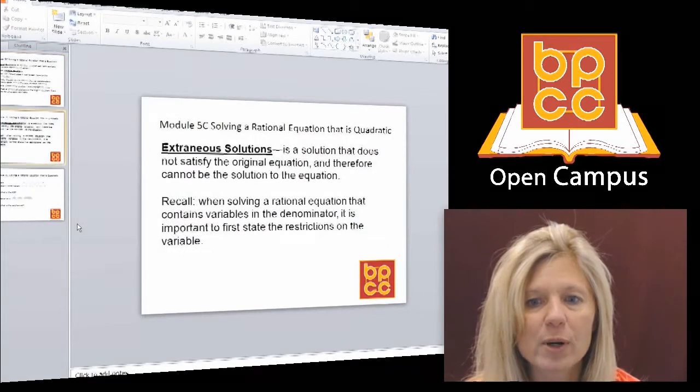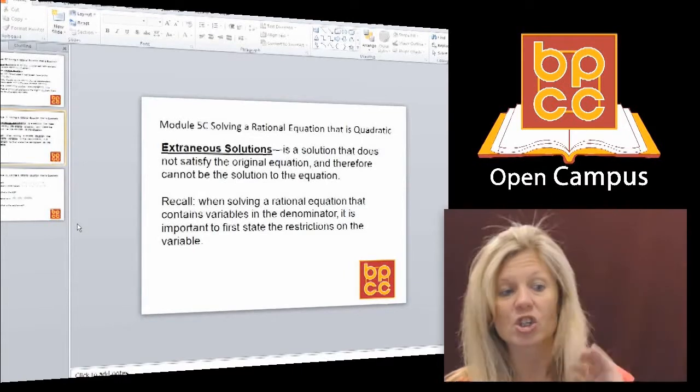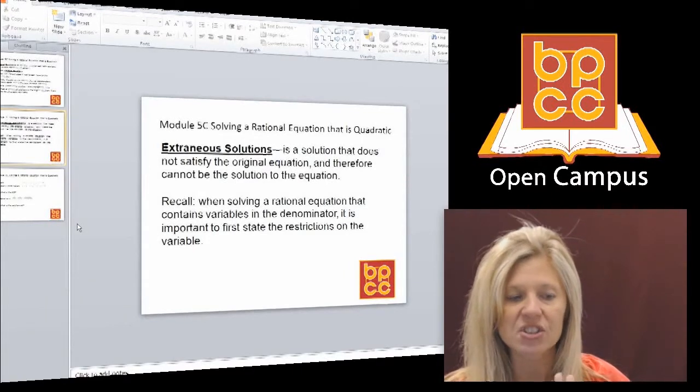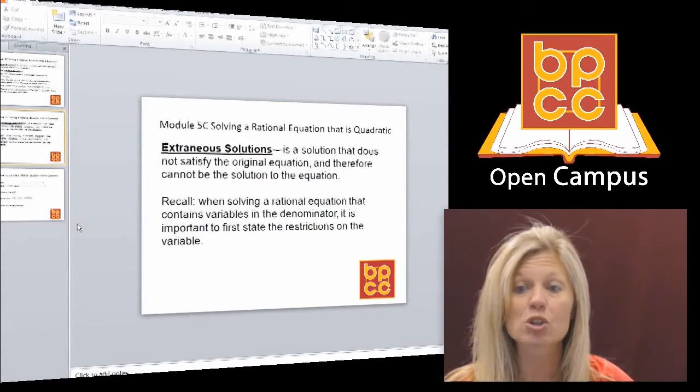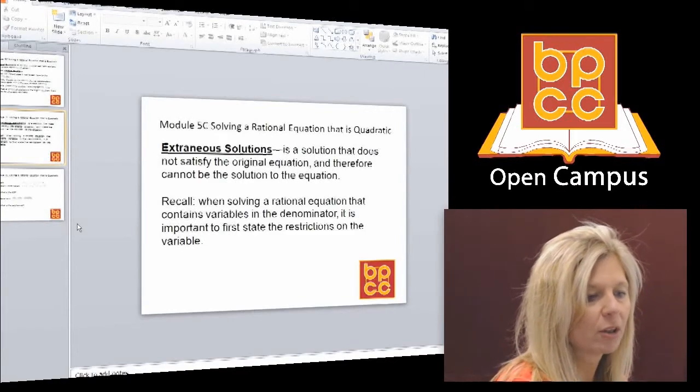So if you remember, we talked about this. When we're solving a rational equation, just like we did in module 1, the first thing we're going to come out and do is decide what values make the denominator 0, and that was called the restrictions. Okay, so let's go to the board and look at an example.